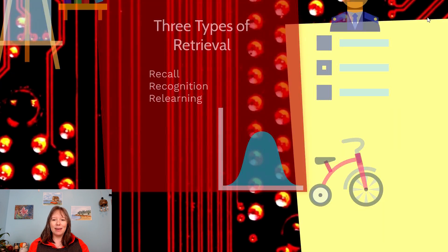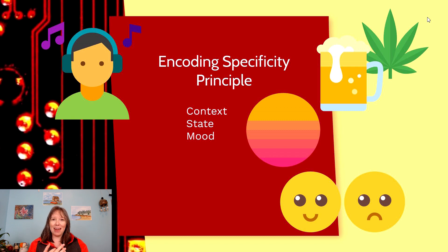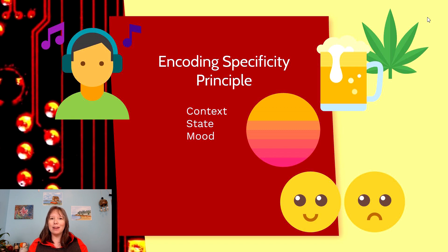When we think about retrieval, we find that sometimes it is easier or more difficult depending on how we encoded the information. If you recall, we talked about structural, phonemic, and semantic processing. Based on how you encoded it, it might be a lot easier to retrieve if you semantically processed it, because now there are more connections to it. In addition, retrieval also depends on the context, your state of mind, or your mood.